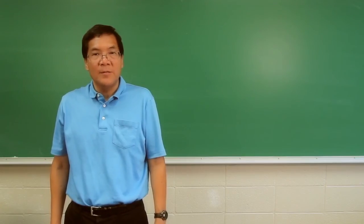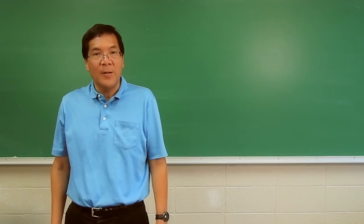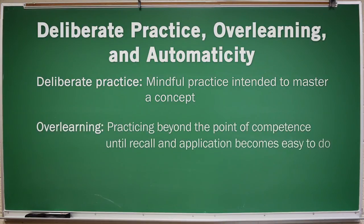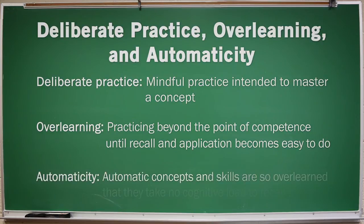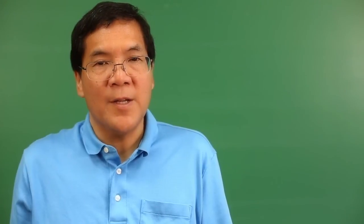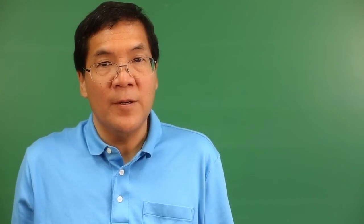So how do we teach concepts with high intrinsic load? The answer is deliberate practice, over-learning, and automaticity. Deliberate practice is mindful practice intended to master a concept — it is not mindless drill, but purposeful, addressing weaknesses in understanding. Students need to engage in deliberate practice with meaningful feedback about their performance. In order to reduce cognitive load, they over-learn the concept, continuing to practice it beyond the point of mere competence until it becomes easy and eventually automatic. Automatic thoughts and skills take no cognitive load, and this is the hallmark of an expert. It often takes years of practice for concepts to become automatic. In order for students to master complex topics, the foundational concepts have to be over-learned, if not automatic, and become part of prior knowledge.